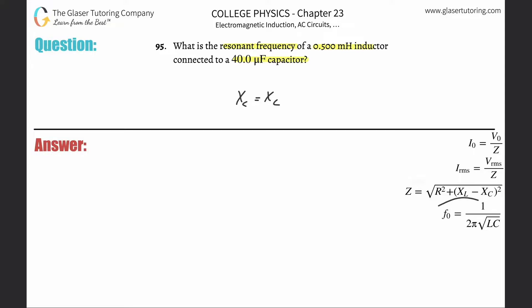Now we have a nice little formula over here on the right hand side to find this resonant frequency. So it's going to be one divided by two pi times the square root of L times C, or the inductance multiplied by the capacitance.